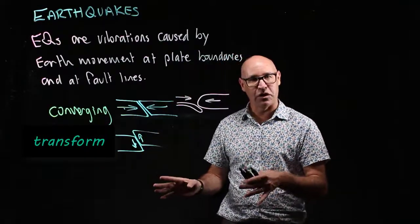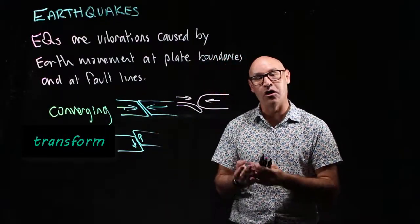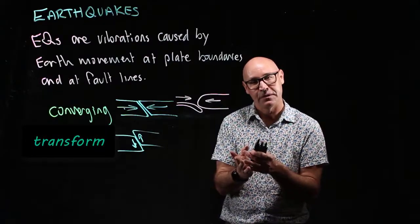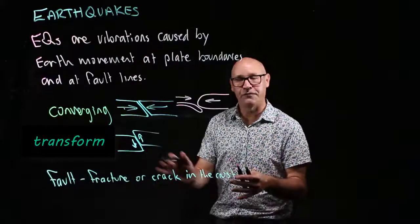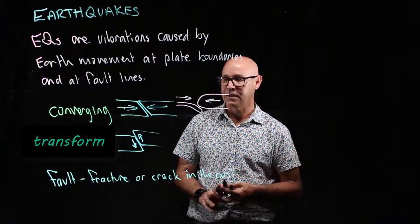And a fault line is an area of fracture of the Earth's surface. So it's a weakness in the Earth's surface, a fracture line. So a fault is a fracture or crack in the crust.